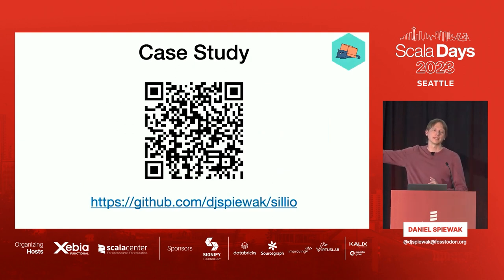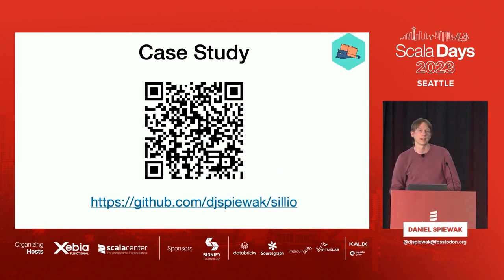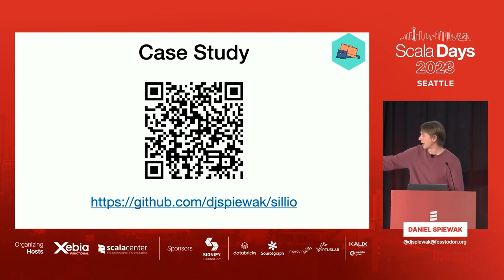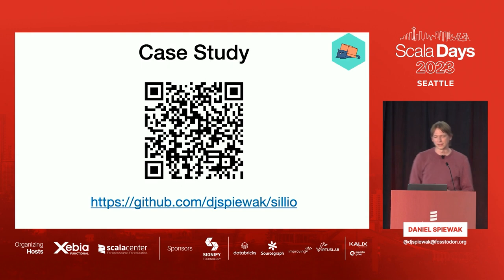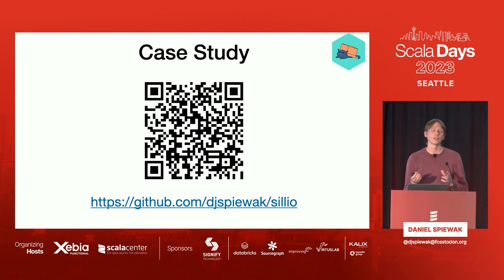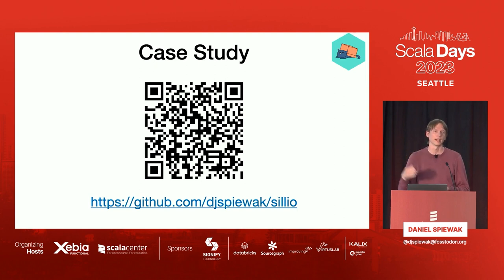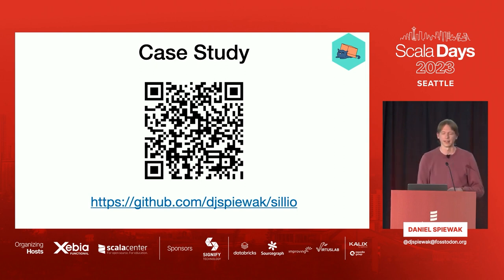If you want to grab the code, this is the GitHub repository: github.com/djspiewak/cilio. I tried to keep the commit history fairly clean so you can go back and forth and see where I added benchmarks, tests, and things — and when I finally ran the code formatter at the end.